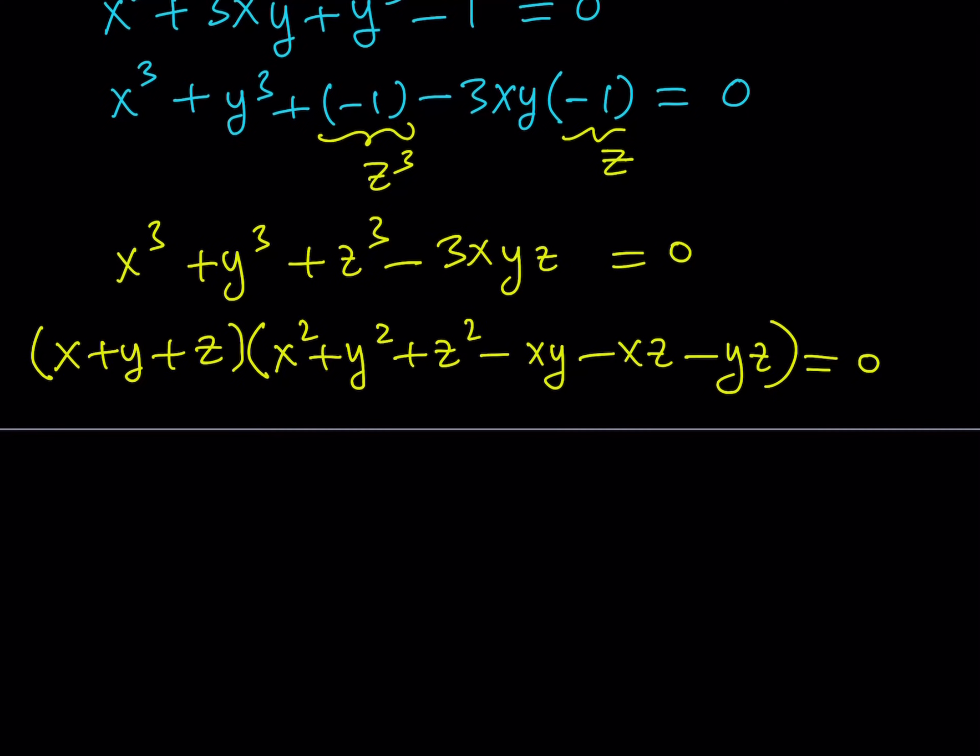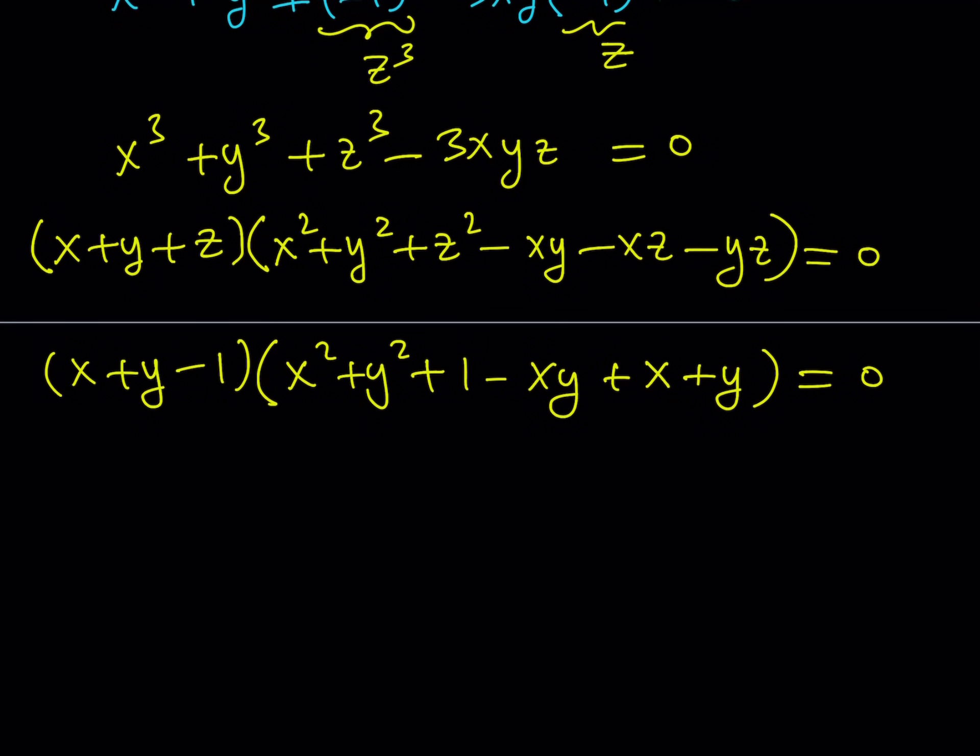So now I want to just replace z with negative 1 so that I can stay with two variables. But remember z is negative so it's going to be a negative 1 here, and z squared is going to be positive 1, and z is negative 1 so this is going to be a plus x and that's going to be a plus y equals 0. Great. Now this expression has two factors. It's already factored. And x plus y minus 1 we can set it equal to 0. Now you've got to remember our goal is to find real solutions, and we're going to find all the real solutions to this problem.